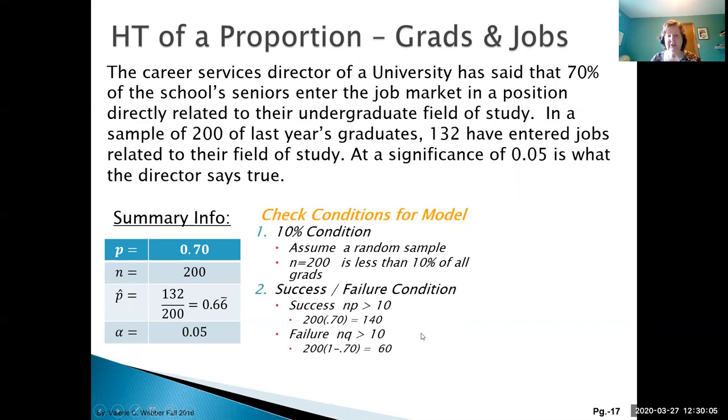We can check our conditions. We can assume that 200 students is less than 10% of all grads, and we can check our sample size np and nq and see that they are both greater than 10, so that's fine.